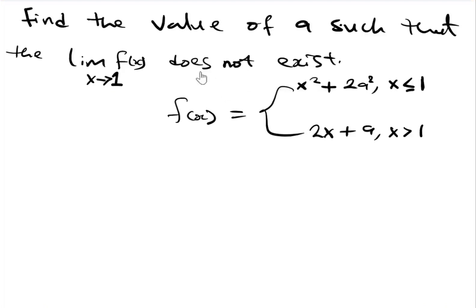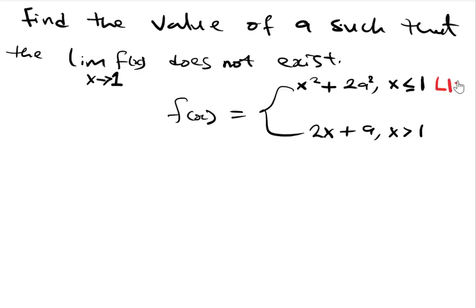The second question says that we should find the value of 'a' for which this limit does not exist. In the same setup, we are given x less than 1 and x greater than 1. The expression for x less than 1 gives the left hand limit, and the expression for x greater than 1 gives the right hand limit.